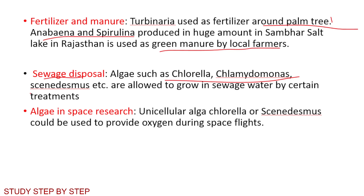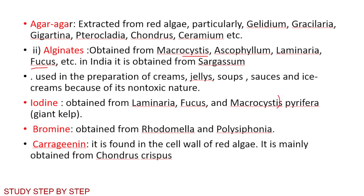Anabaena and Spirulina are produced in large amounts and used as green manure by local farmers. Sewage disposal: algae such as Chlorella, Chlamydomonas, and Scenedesmus are allowed to grow in sewage water by certain treatments. Algae in space research: Chlorella and Scenedesmus. Agar agar is extracted from red algae, particularly Gelidium and Gracilaria. Algin is used in preparation of creams, jellies, soups, sauces, and ice creams; obtained from Macrocystis, Laminaria, Sargassum, and Fucus. Iodine is obtained from Laminaria, Fucus, and Pyrifera — also called kelp.